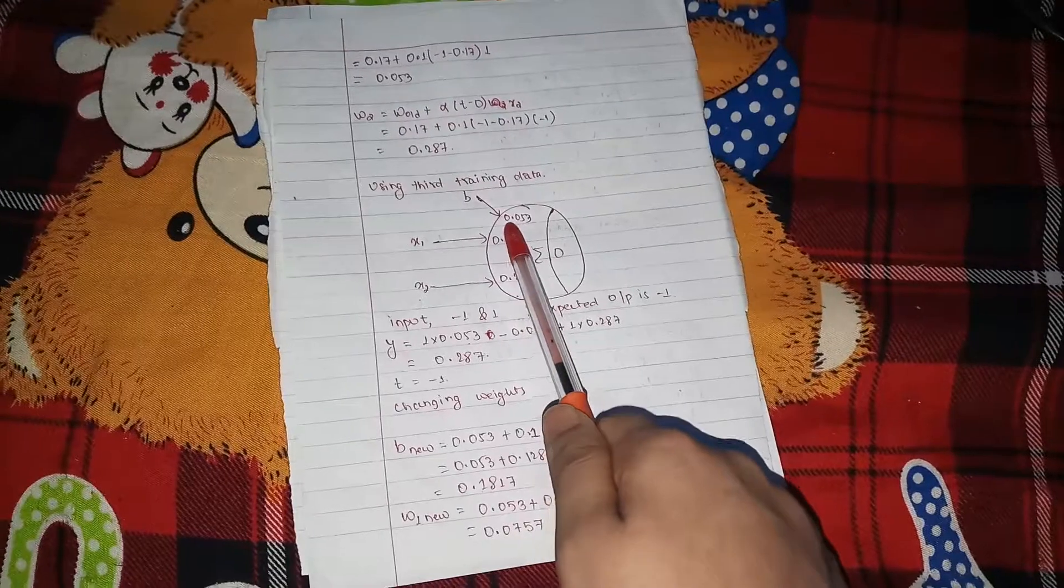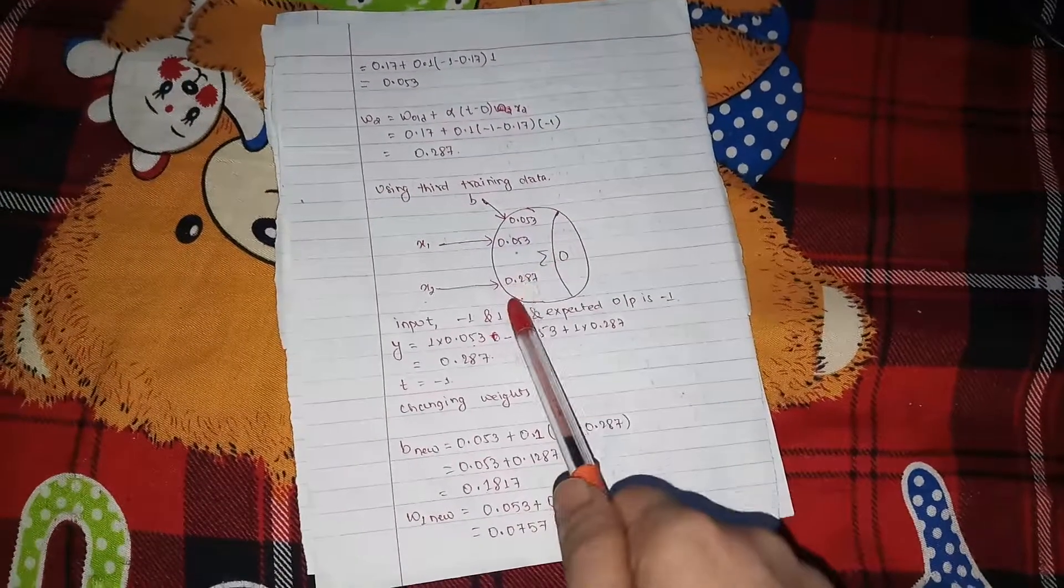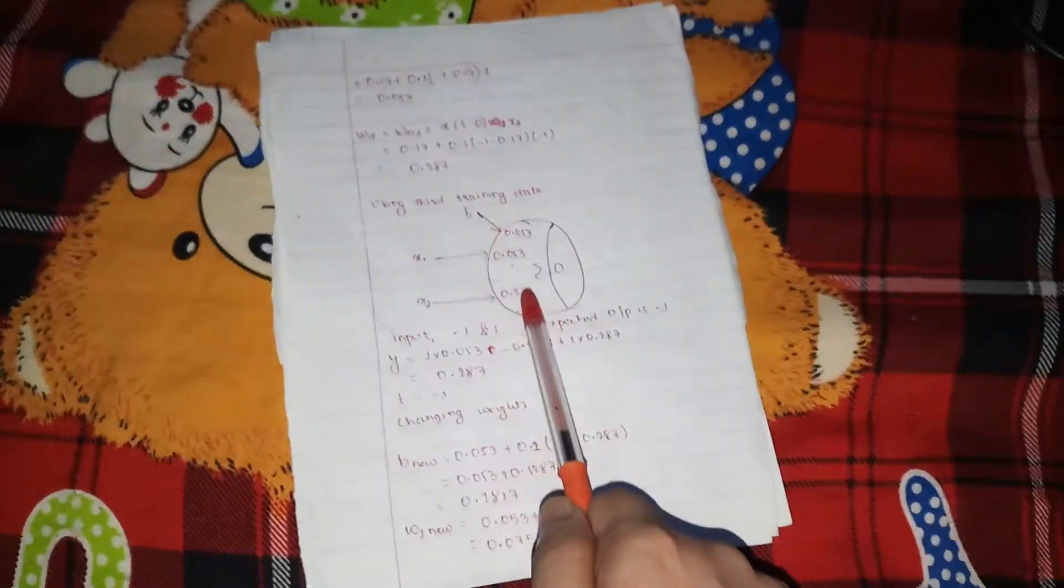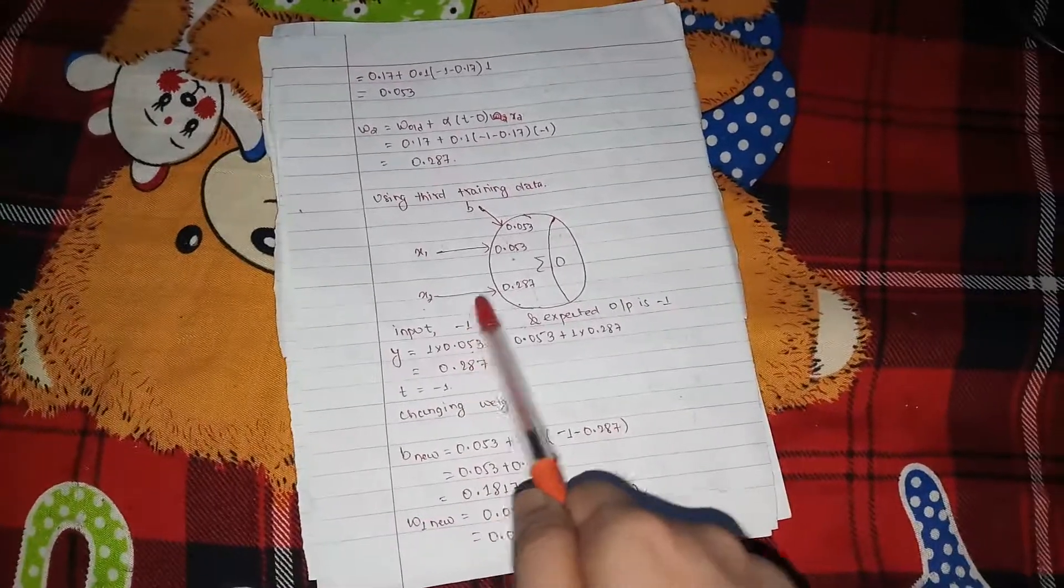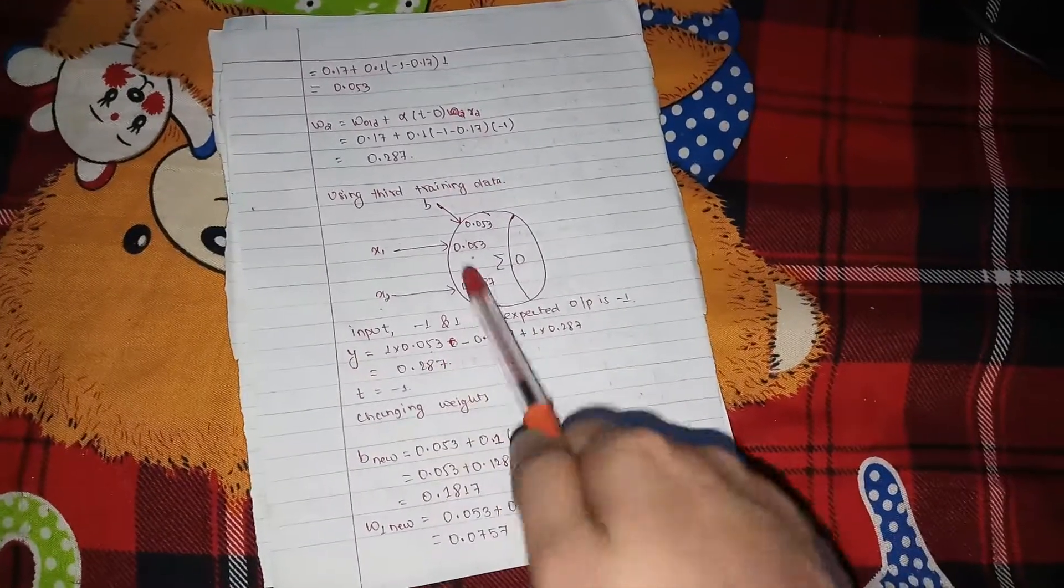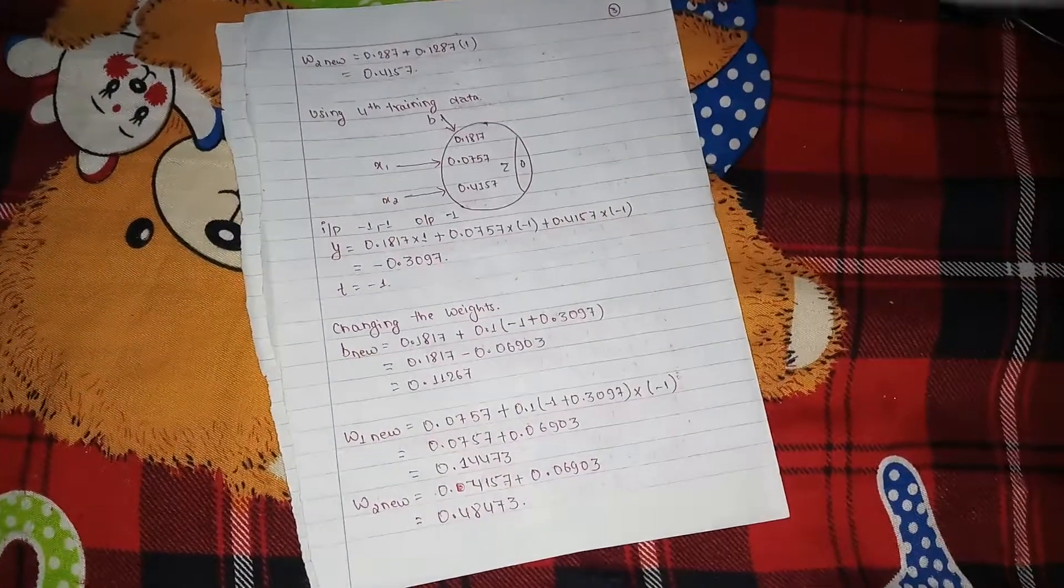So the new weightage was found 0.053, 0.053, 0.287, from the above, and now the input and the expected output is used again to change this.